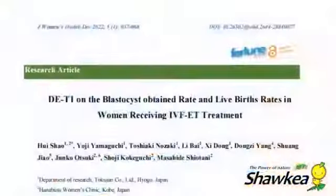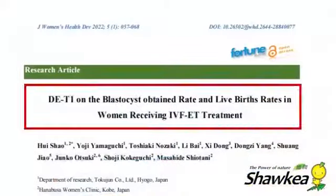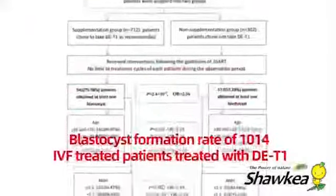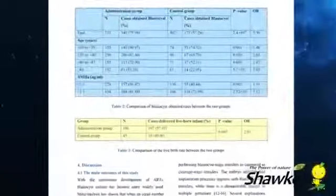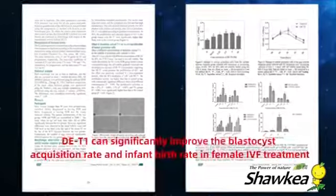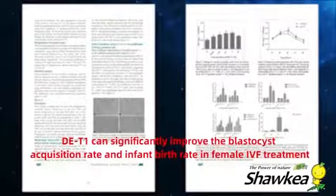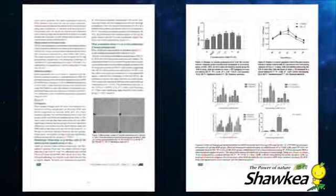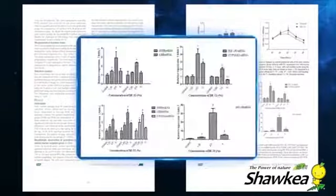Please check out the papers of world-class authoritative journals. We investigated 1,014 infertile women taking Shawkea DT1 dandelion oral liquid and found that it can significantly increase the activity of granulosa cells around the eggs. It also increases related reproductive hormone receptors such as FSH and LH, blastocyst acquisition rate, and infant birth rate.